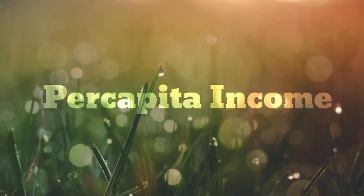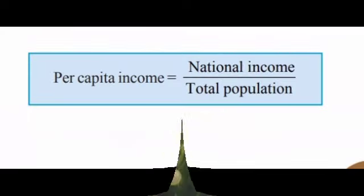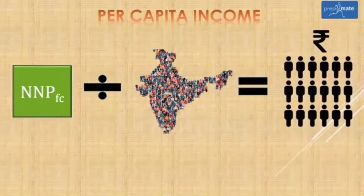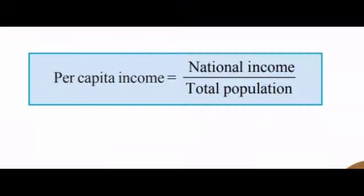The fourth concept of national income is per capita income. What is per capita income? The average income of an individual in a country is the per capita income. When we divide the national income by the total population, we get per capita income. Per capita income is equal to national income divided by total population.